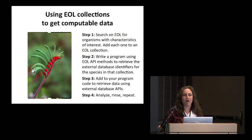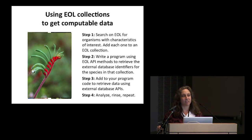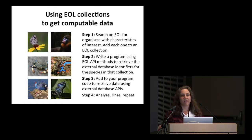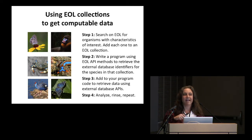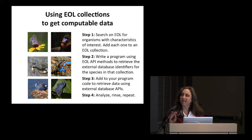We have a feature on EOL where you can build collections. Imagine you're a scientist interested in the evolution of red coloration in plants — there's actually a talk next week at University of Maryland just on this subject. You can search EOL for organisms with a characteristic like that and add each one to a collection; we've already done this for blue coloration in the Life is Blue collection. If you're a programmer, you can write a program using our API to retrieve database identifiers for each organism and use those identifiers to pull data — such as genetic sequences or other environmental data from external databases — then clean it up, do some analysis, and repeat the process.